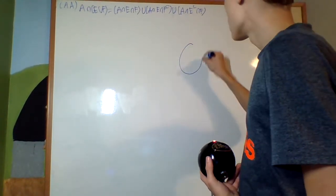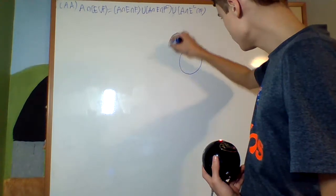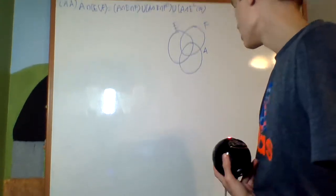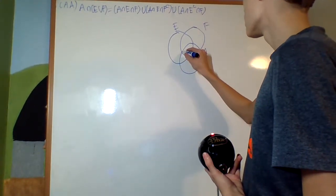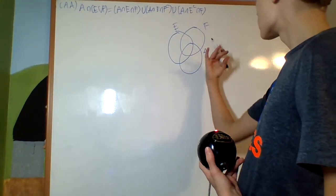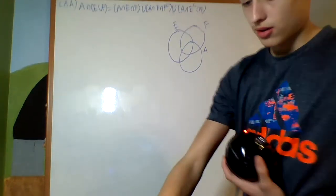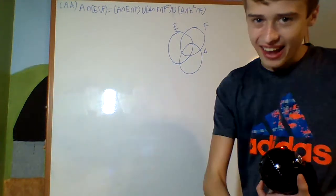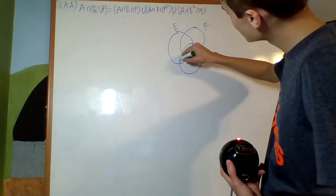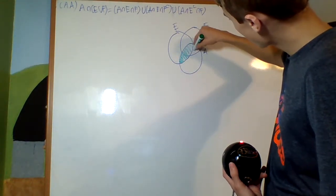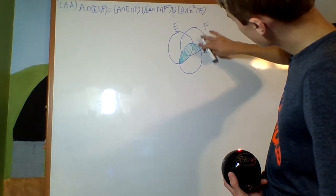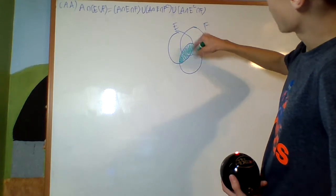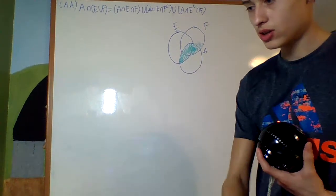What's the intuition behind this? Because say this is A, this is E, this is F. So right there, if I do A intersect (E union F), A intersect (E union F) is that area, that area right there.